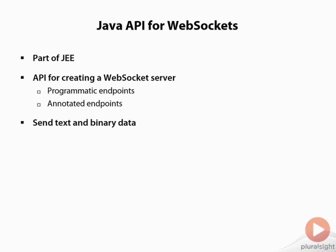The API allows us to send both text and binary data. It also allows us to use Java types in the server and convert those Java types into JSON to send to the client, and any JSON received back from the client can be converted back to Java types within the server — making writing code for the API very easy, as we simply use built-in Java types. It also supports URI templates, which allow us to configure the URIs the server can receive and change the routing of requests depending on the incoming URI.